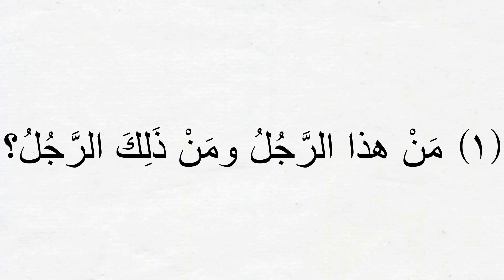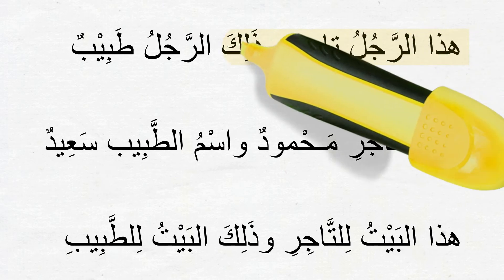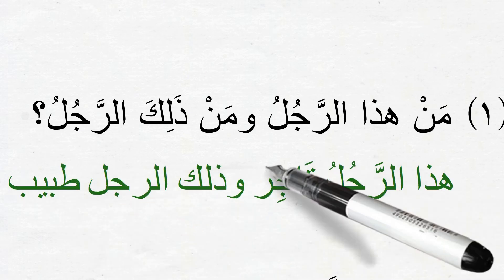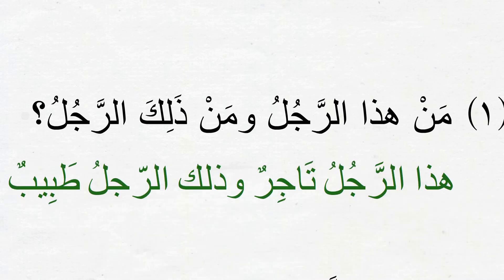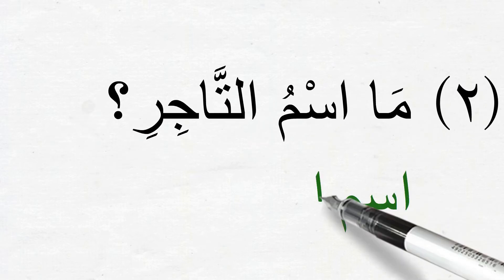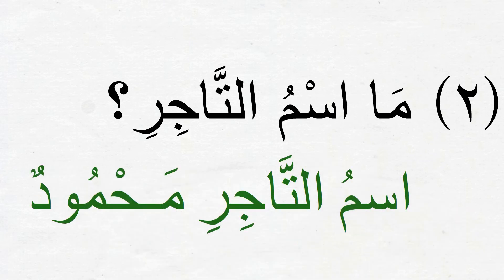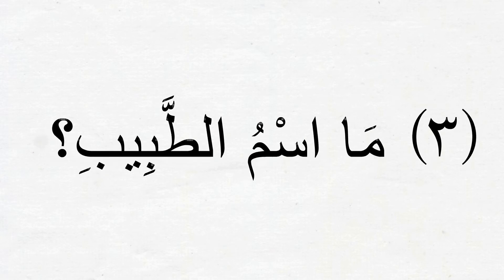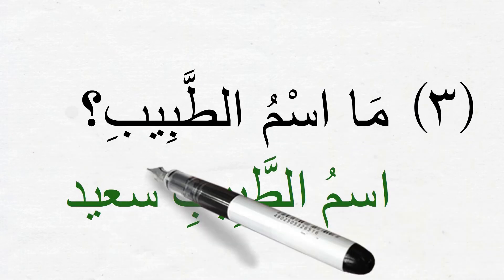Question one: من هذا الرجل ومن ذلك الرجل؟ The answer will be: هذا الرجل تاجر وذلك الرجل طبيب. Question two: what is the name of the trader? His name was Mahmoud, so the answer will be: اسم التاجر محمود. Question three: ما اسم الطبيب — what is the name of the doctor? Based on the text his name is سعيد, so our response should be: اسم الطبيب سعيد.